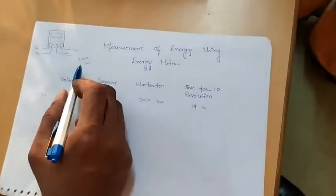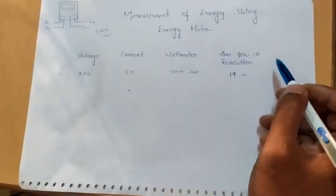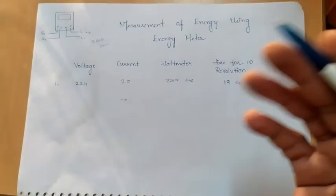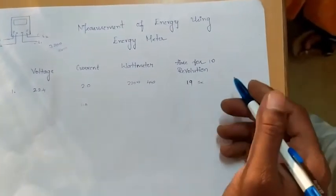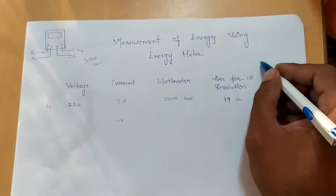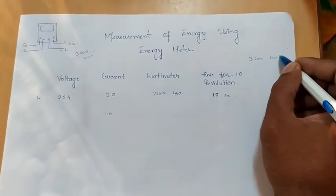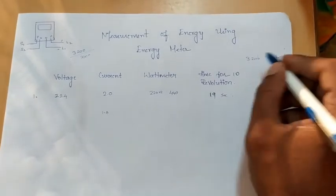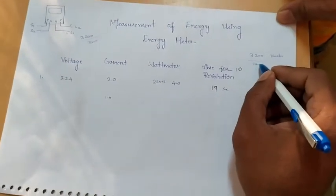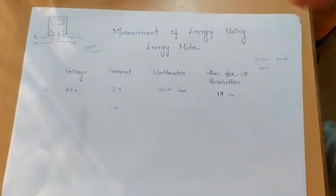We can calculate the energy, energy measured, using the formulas. That is, it is measured in 3000 kilowatt per hour. We have to divide it by 3600 to get the total power.